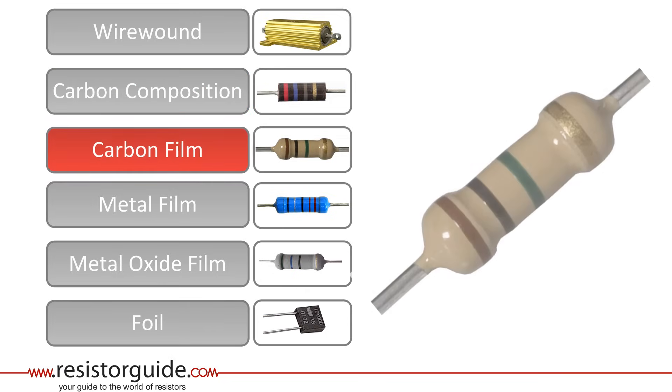Carbon film resistors are widely used today. They are made out of a non-conducting core with a thin carbon film around it. Carbon film resistors have a higher accuracy than carbon composition resistors, but have inferior properties compared to metal or metal oxide film.